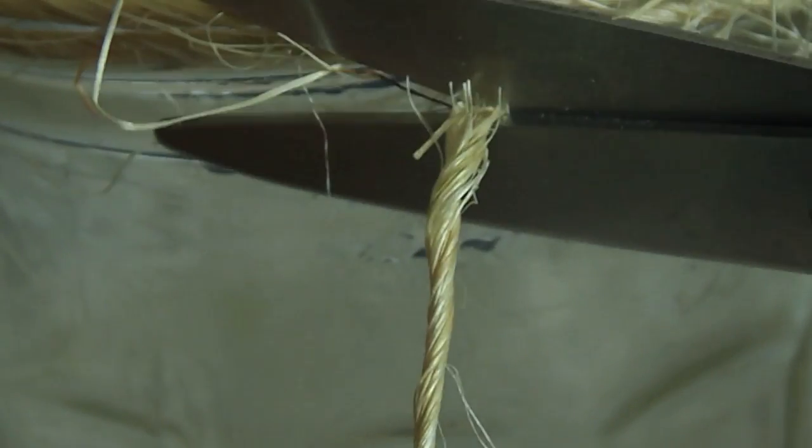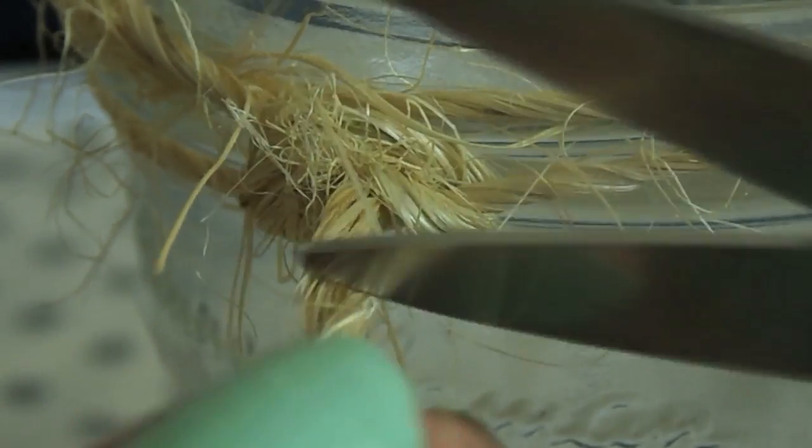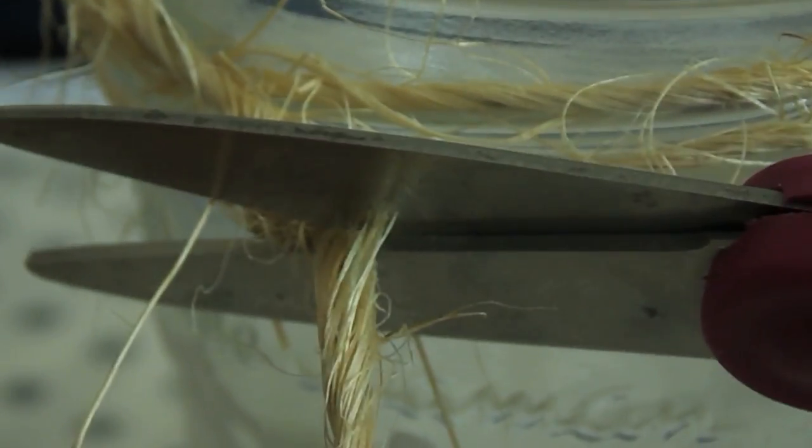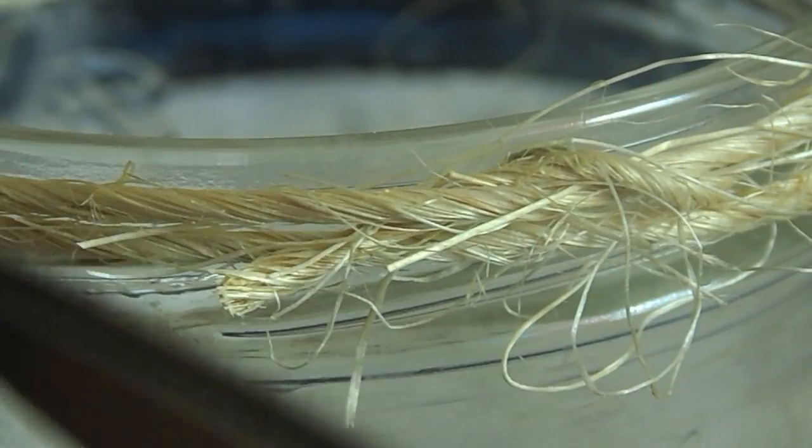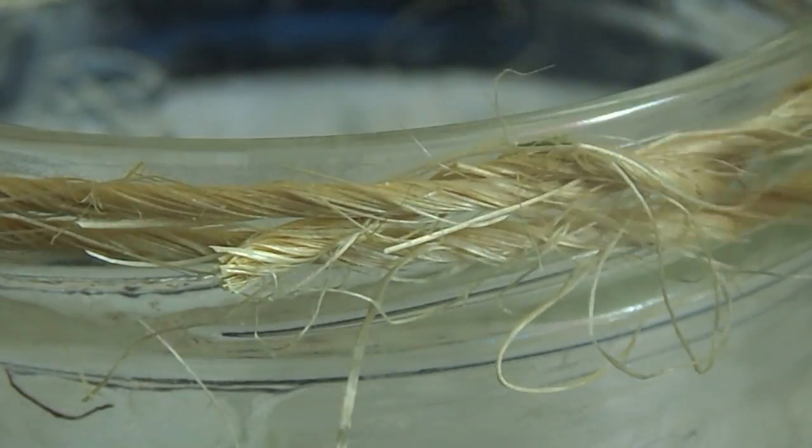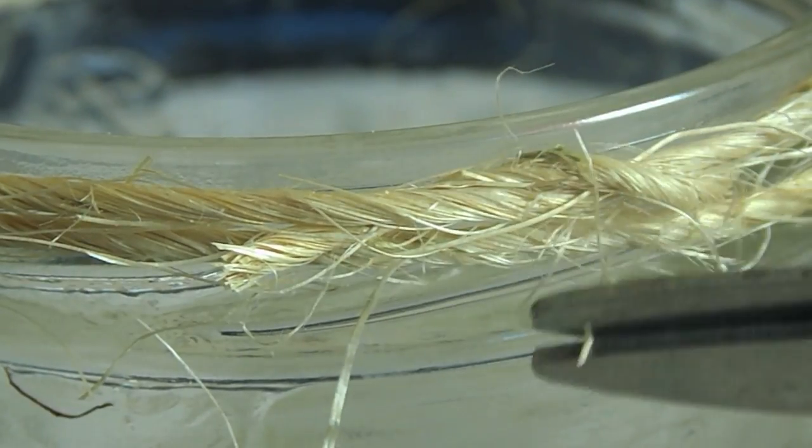So after you've finished that you're just going to clip off the extra pieces of twine. And then you're going to clip off these little hairy thingies. I don't know why it does that but you're just going to clip those off to give it a cleaner look.